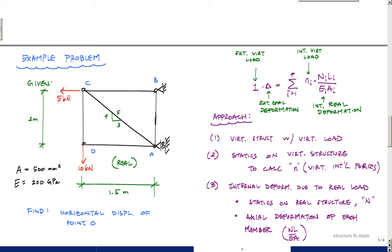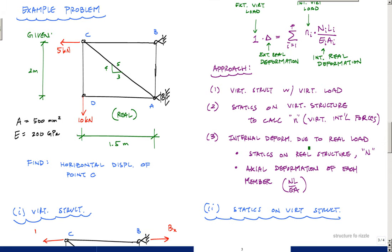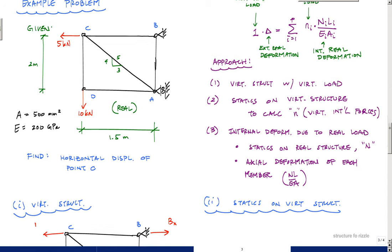We're going to apply the principle of virtual work, where we apply a unit force in the direction and location where we want to find the deformation. We calculate using a virtual structure with the virtual loading to get the internal virtual load (n), and then calculate the internal deformation due to real loads (N), using the axial deformation formula NL over EA for each member. First we draw a virtual structure with a virtual load, do statics to find the internal virtual forces n, then calculate the real internal deformations.